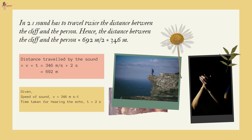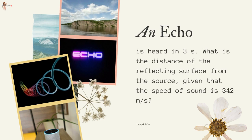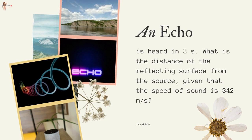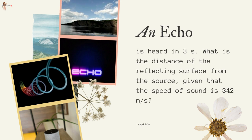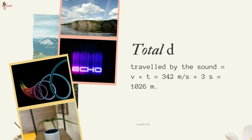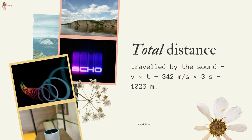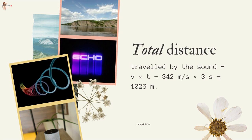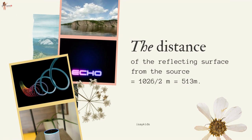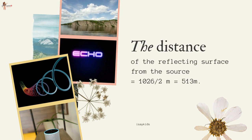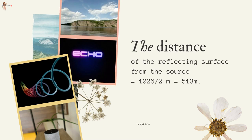Another example: An echo is heard in 3 seconds. What is the distance of the reflecting surface if the speed of sound is 342 m/s? Total distance travelled = v × t = 342 × 3 = 1026 meters. Hence, the distance of the reflecting surface from the source is half of this: 513 meters.